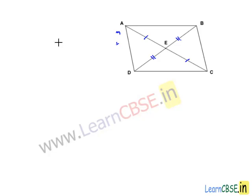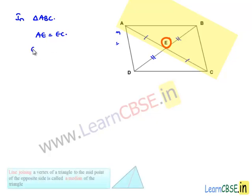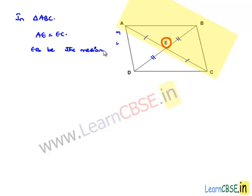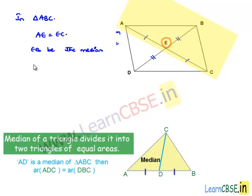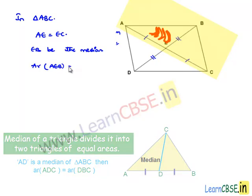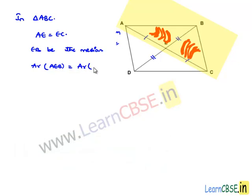Now let us consider triangle ABC. In triangle ABC, AE is equal to EC. Therefore, we can say that EB is a median. When EB is a median, it divides the area of triangle ABC into equal halves. That is, area of triangle AEB is equal to area of triangle BEC. Let it be as equation number three.